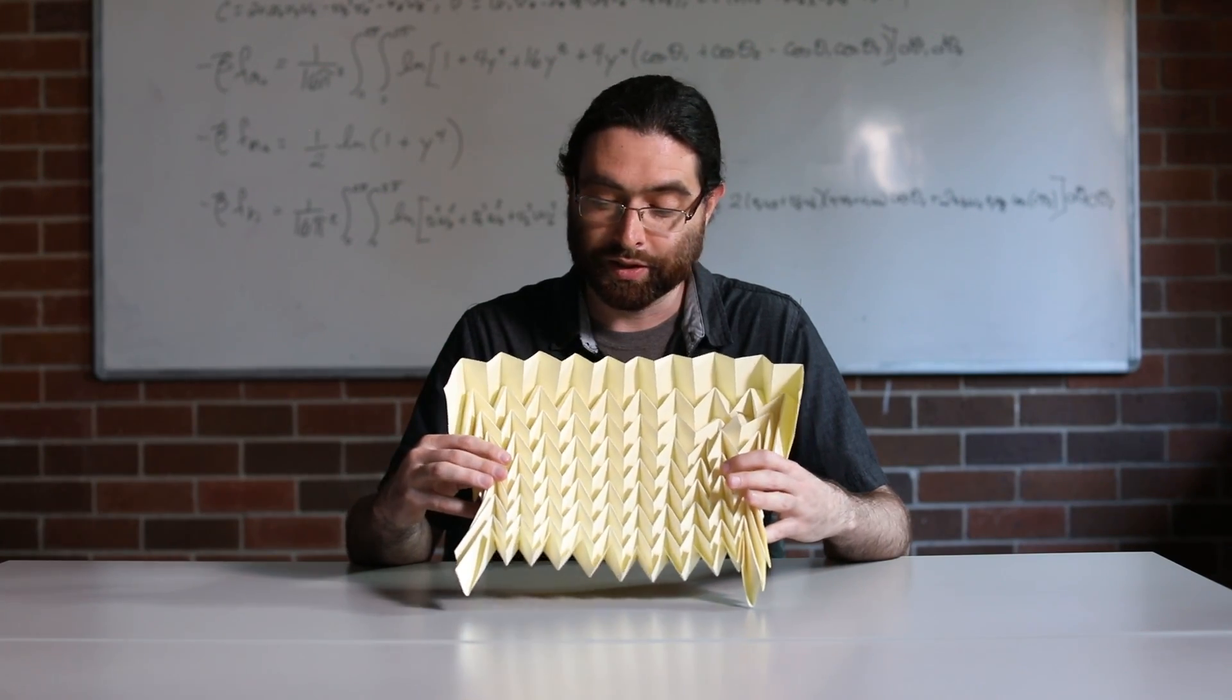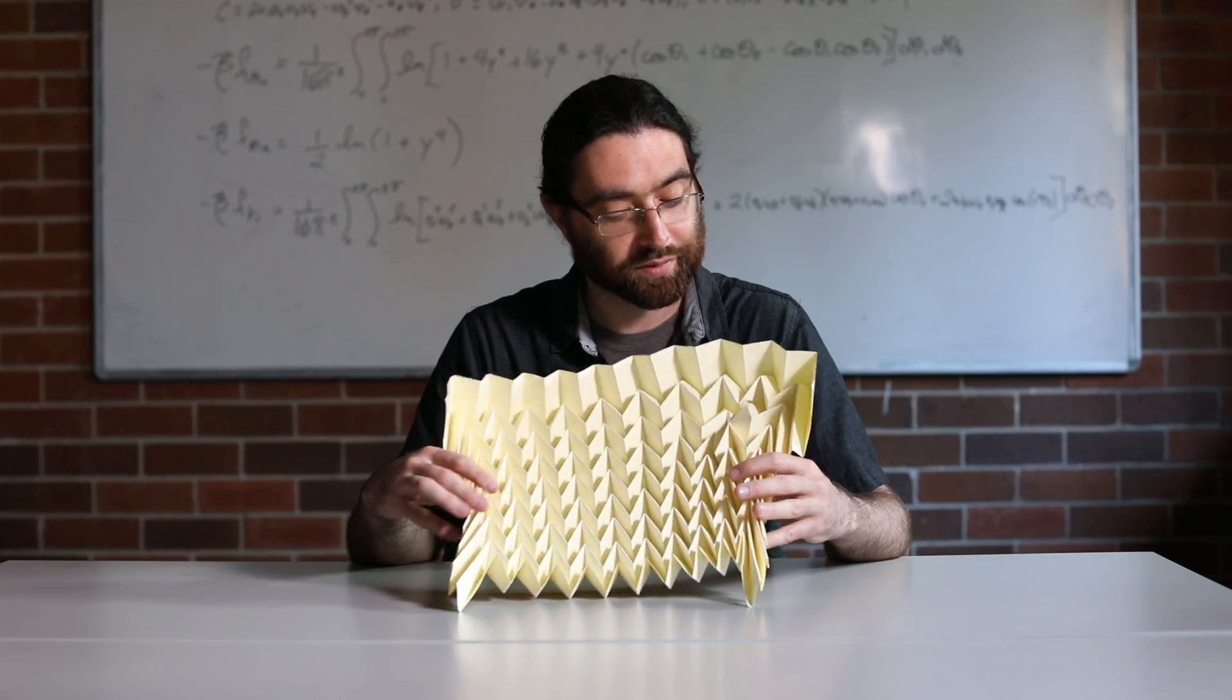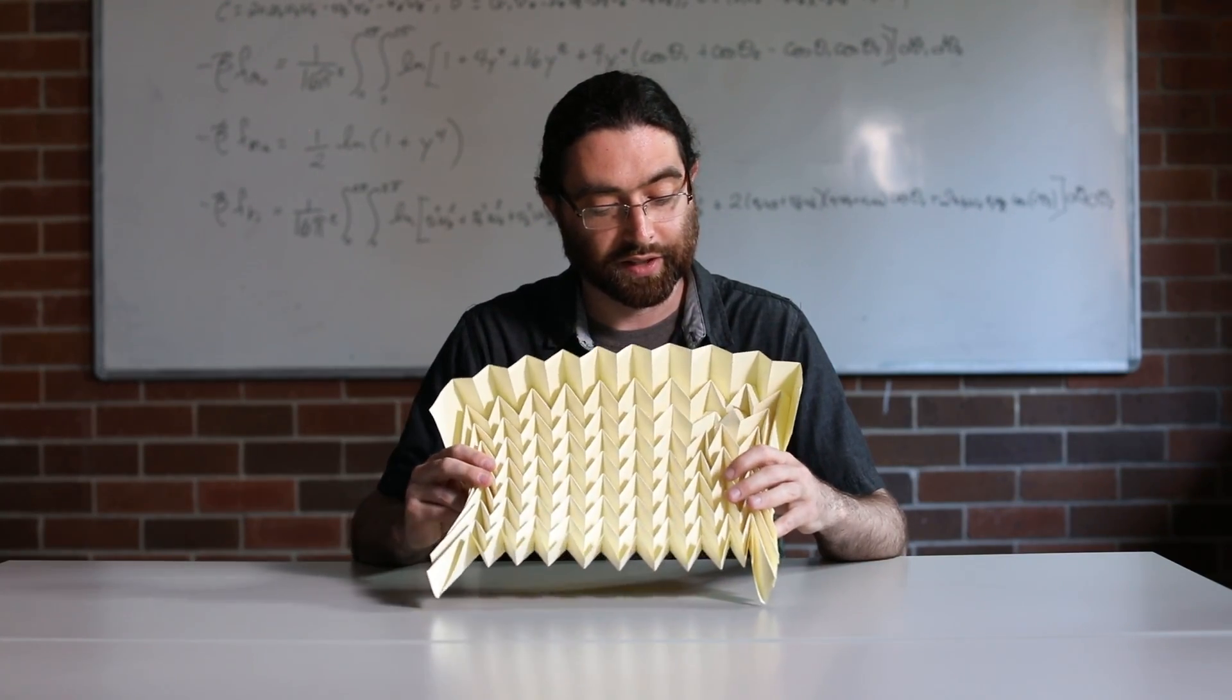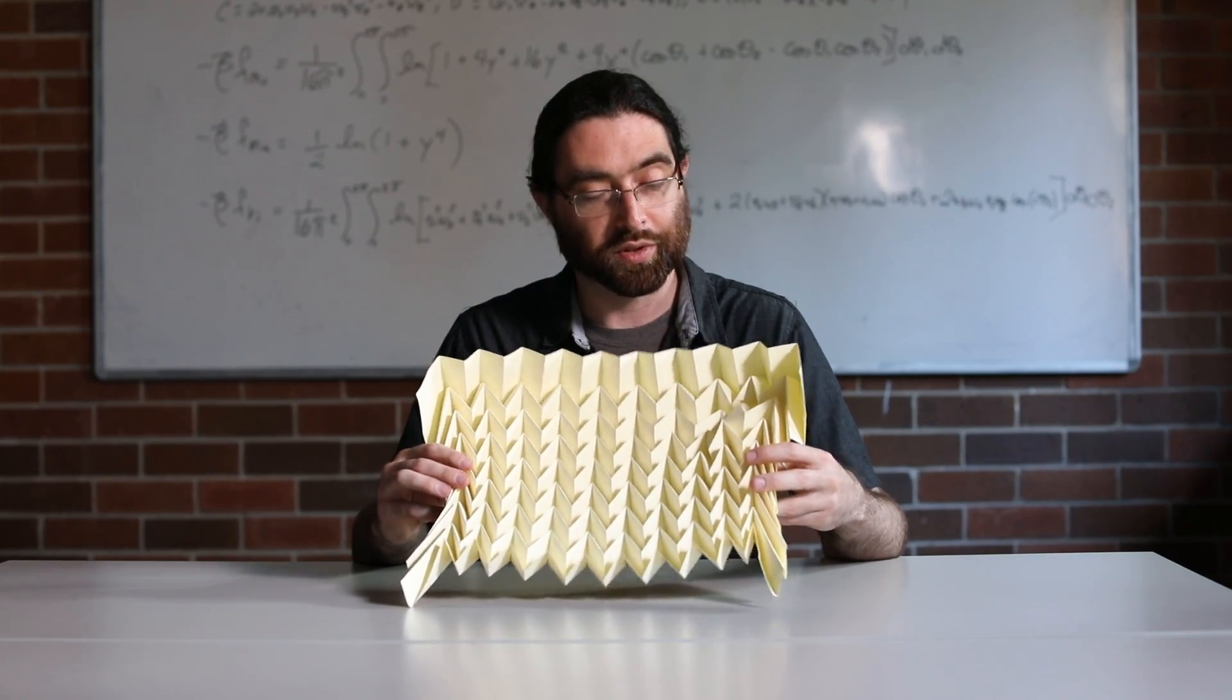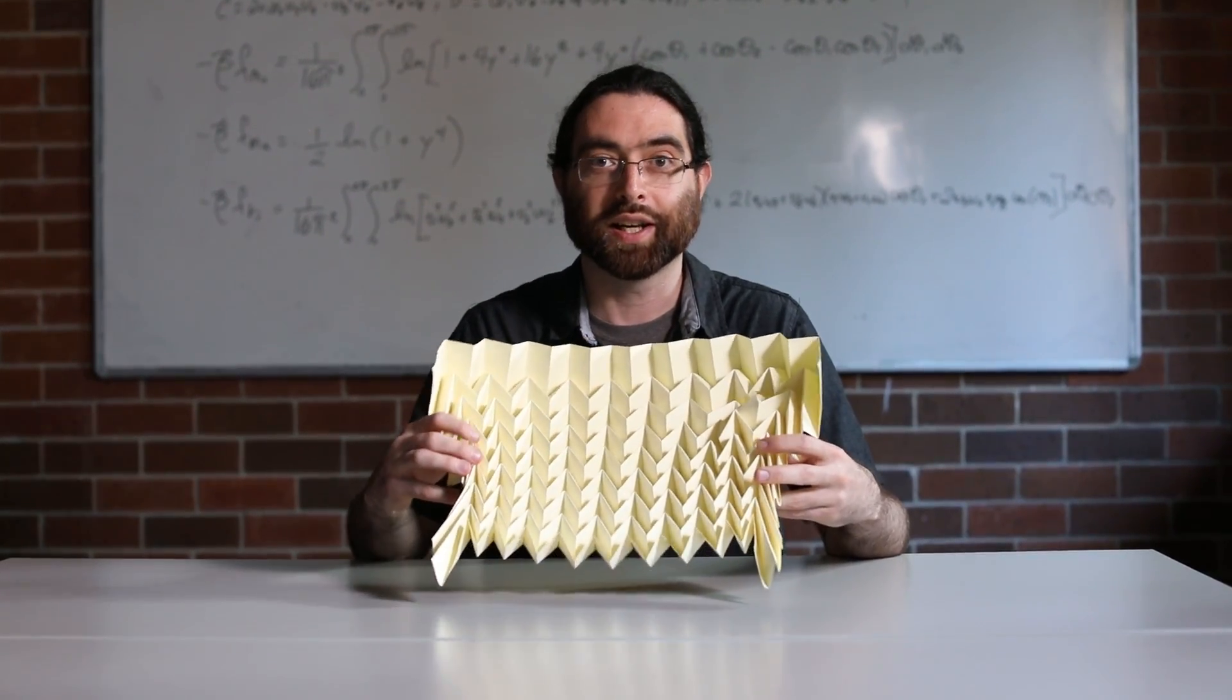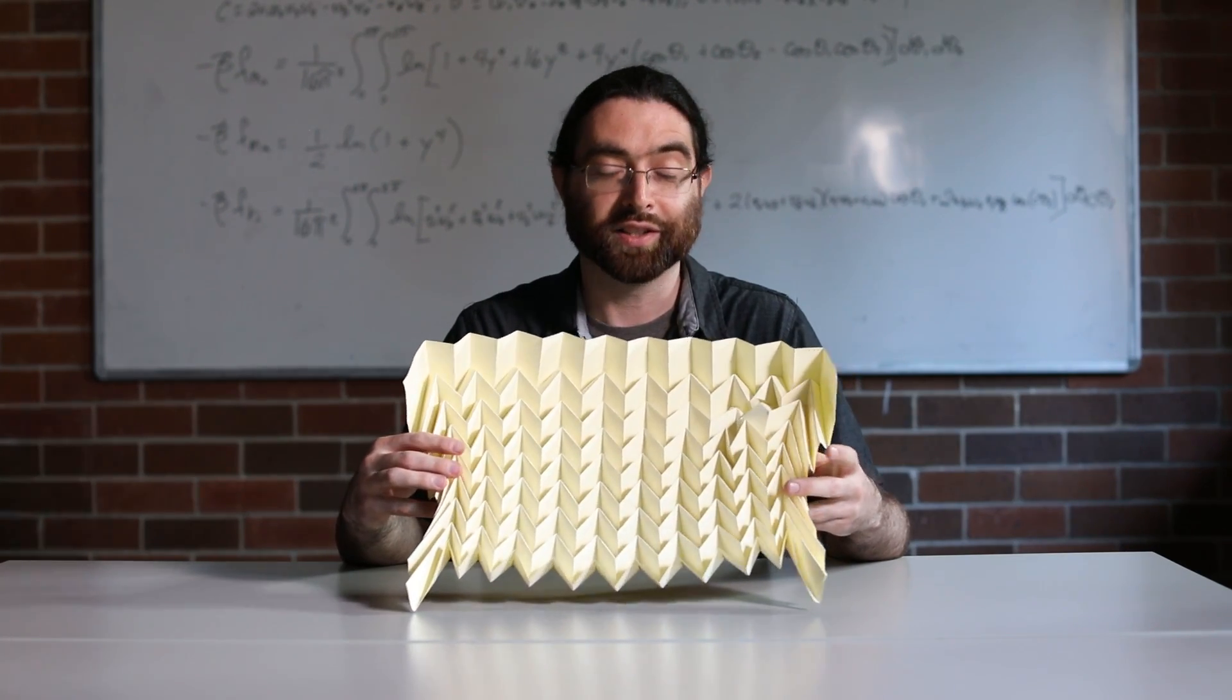So in order to do that I related origami to an area of physics named statistical mechanics, and I considered each of the defects as an atom that can interact with its neighbors. And with sufficient number of atoms interacting, you can show that the Miura Ori has a phase transition, a point at which all of the long-range order in the material vanishes.